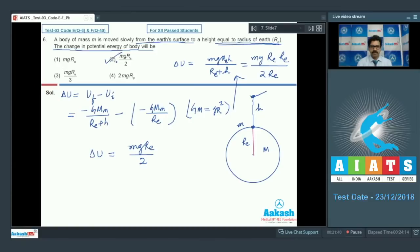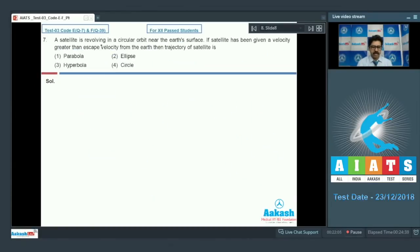Question 7: A satellite is revolving in a circular orbit near the earth surface. If satellite has been given a velocity greater than escape velocity from the earth, then trajectory of the satellite is? For different speeds, satellites have different trajectories. If the idea is not clear, let me explain. If this is earth and you have to launch a satellite, it is raised to a height and from there it is given horizontal velocity.